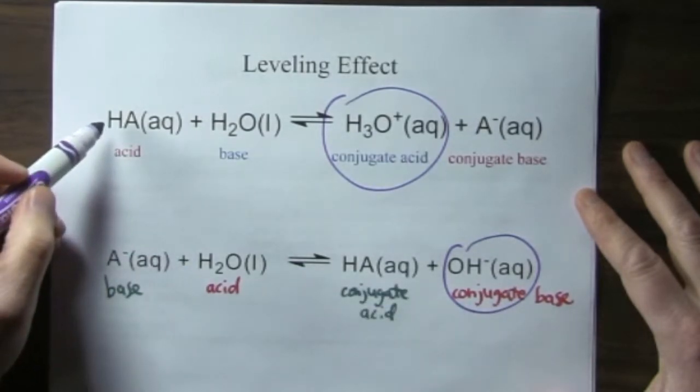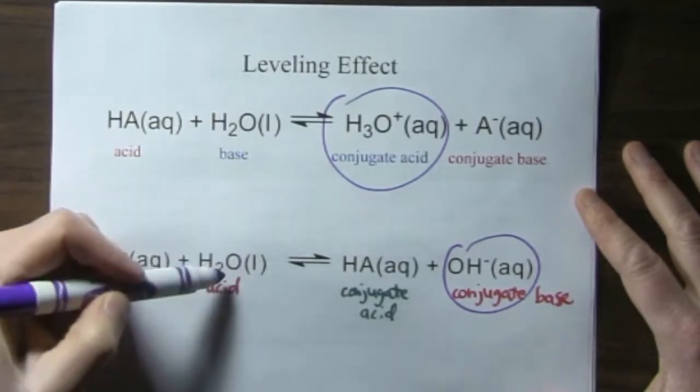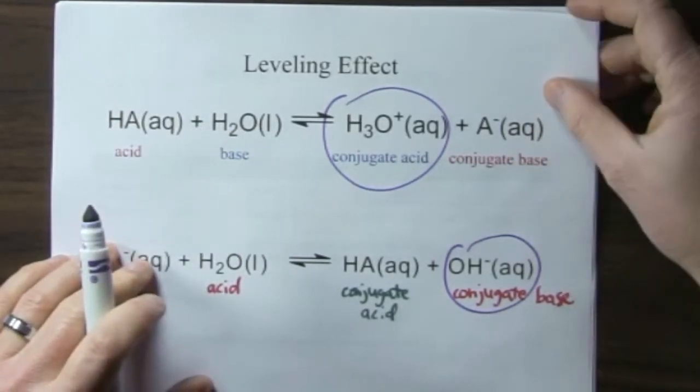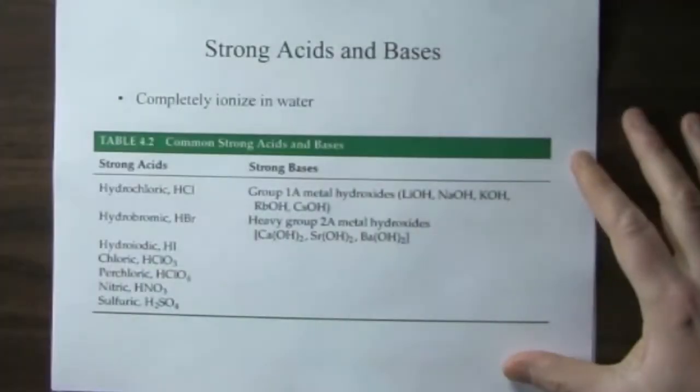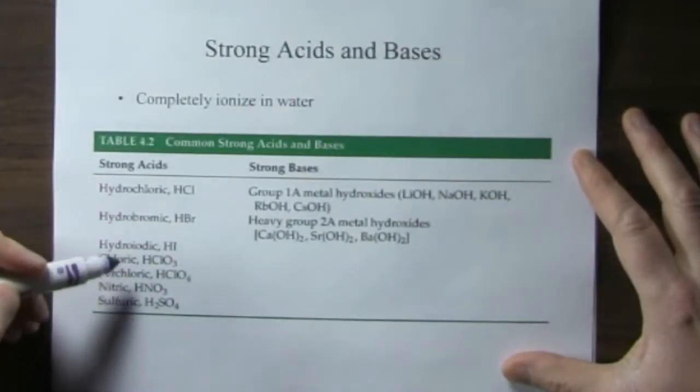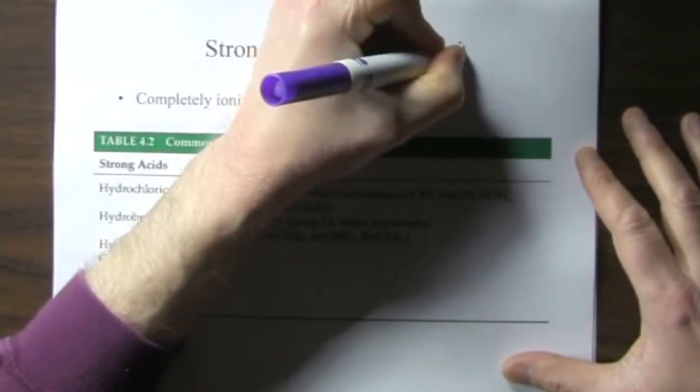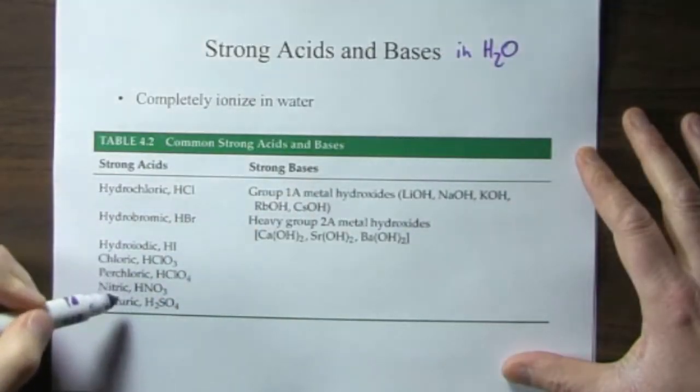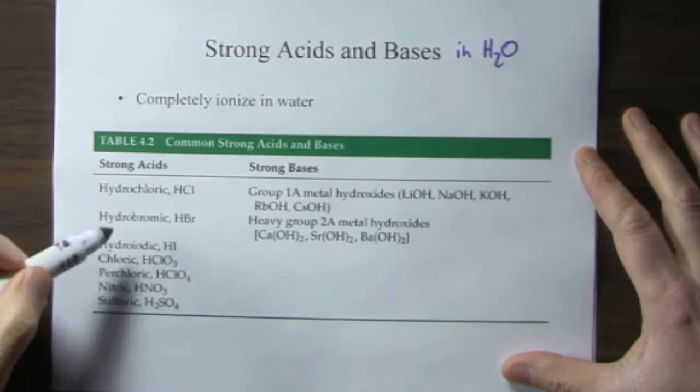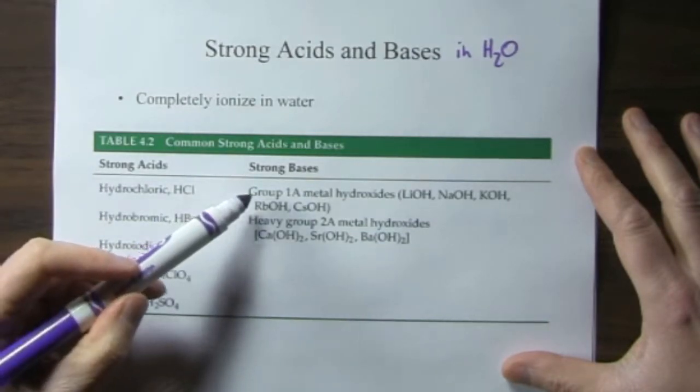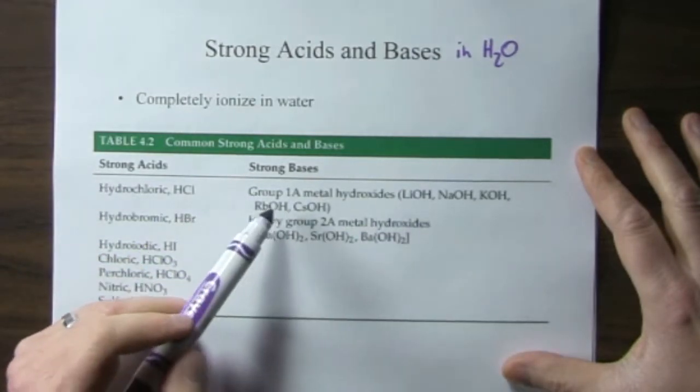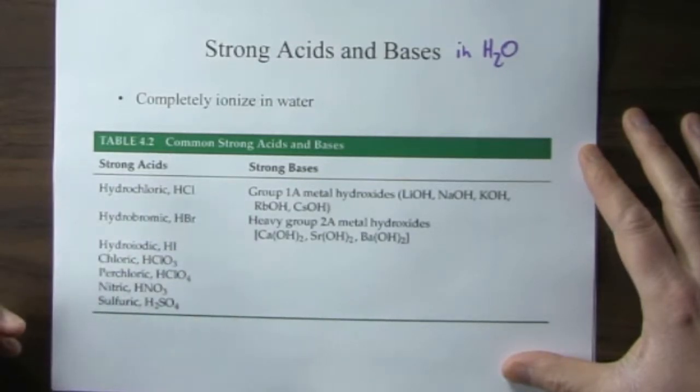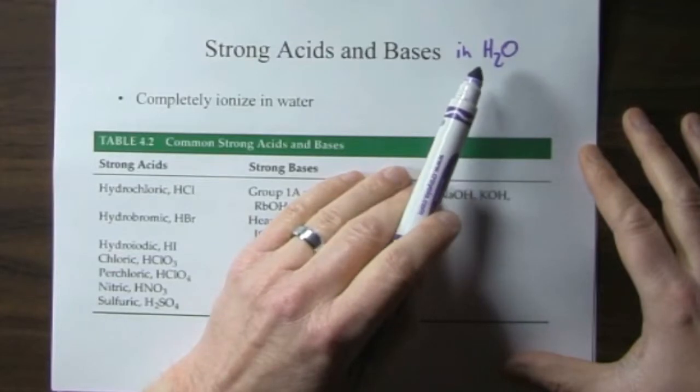So there's a limit in water, because of this reaction, of how strong an acid can be and how strong a base can be. And there's a handful of acids and bases that are strong in water. Hydrochloric acid, for example, is a strong acid. The sodium hydroxide is a strong base, as we saw in the previous slide. So there's a handful of these, but this is only true for water.